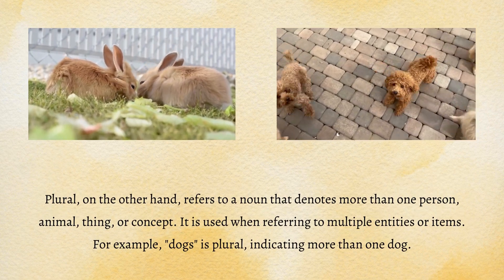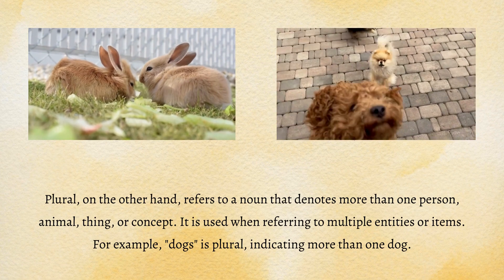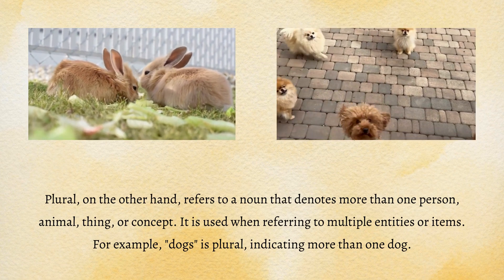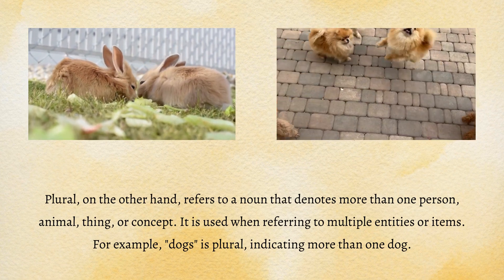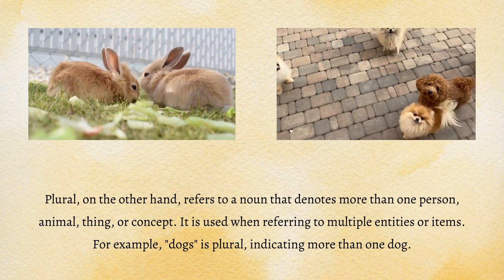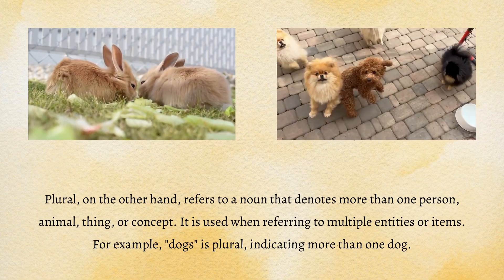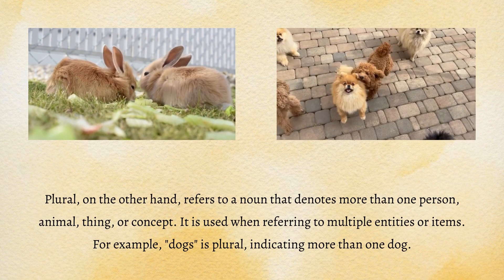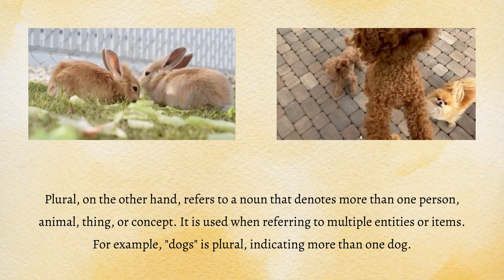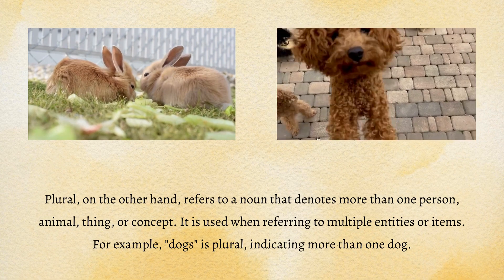Plural, on the other hand, refers to a noun that denotes more than one person, animal, thing, or concept. It is used when referring to multiple entities or items. For example, 'dogs' is plural, indicating more than one dog.